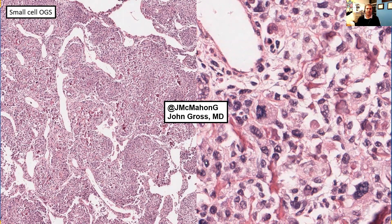Here's a photomicrograph of small cell osteosarcoma, with an intermediate to low power view on the left showing these primitive cells with purple to pink matrix production that can be seen better on the right. This is mineralized osteoid and a very wispy lace-like matrix production, which is what we need to see in order to make the diagnosis of osteosarcoma.